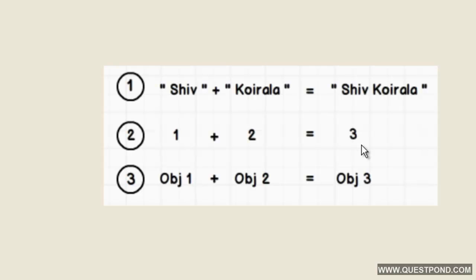In other words, if the plus sign has inputs as strings it will do concatenation, and if it has inputs as numbers it will do addition. This is nothing but polymorphism. If we look at the word polymorphism — 'poly' means many and 'morph' means it changes as per situation. In the first situation when the plus sign saw two strings, it went ahead and did concatenation. In the second case when both inputs were numbers, it went ahead and did arithmetic addition.